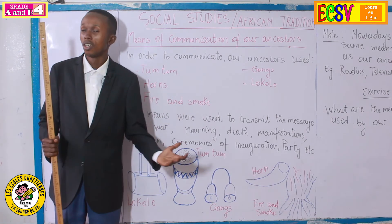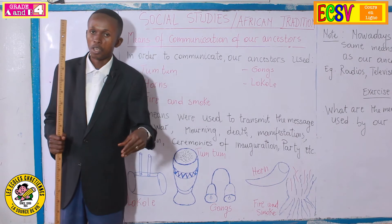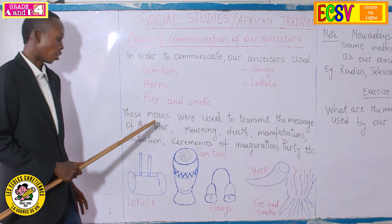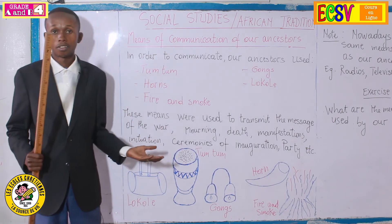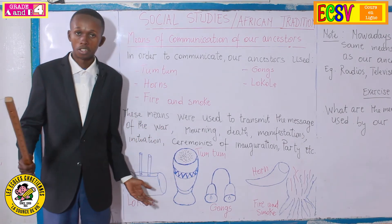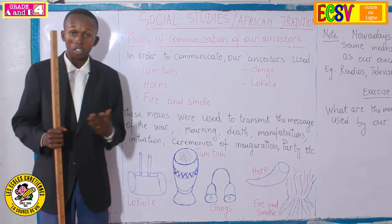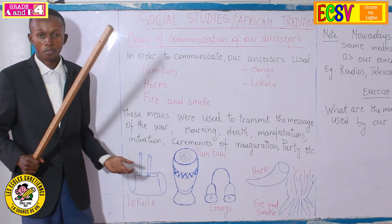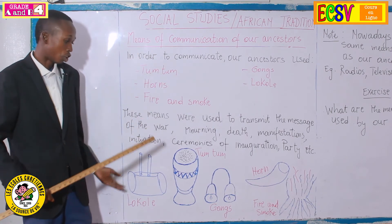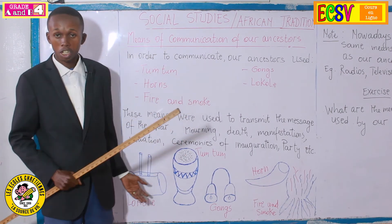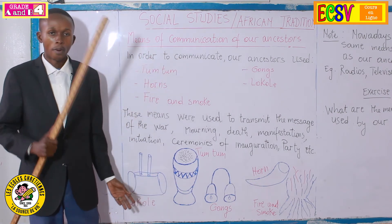The chief wakes up one morning and starts calling people — no, there should be something important. For example, mourning: if someone died, everybody in the village must be informed. Death, another manifestation. You know, in life there are a lot of manifestations. If there is a manifestation where the chief wants to get the people, he should communicate. Also initiation, ceremonies of inauguration, party — the party hasn't started only nowadays, no. The party has been around for a long time.